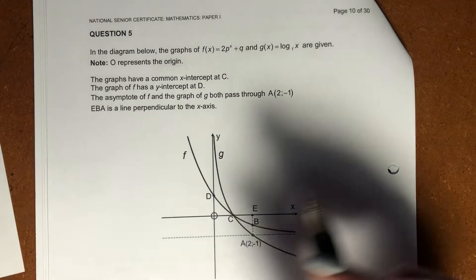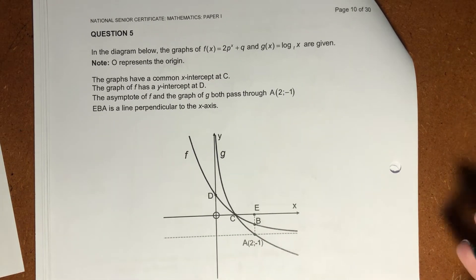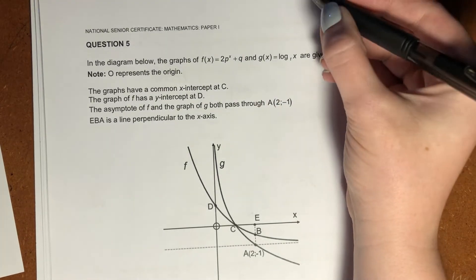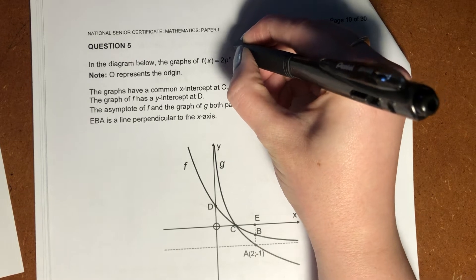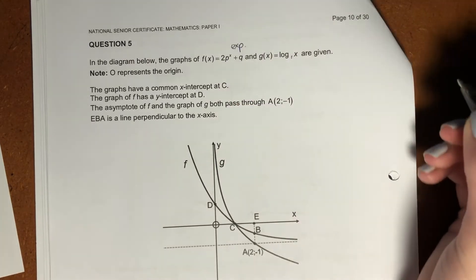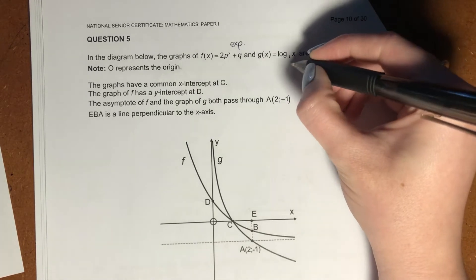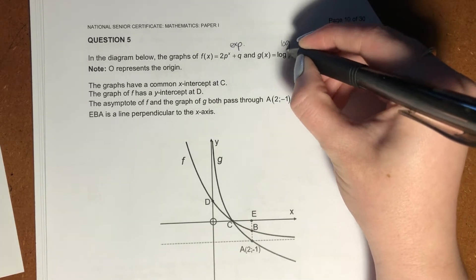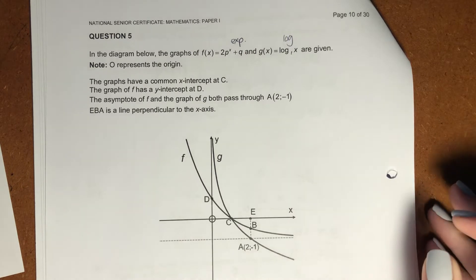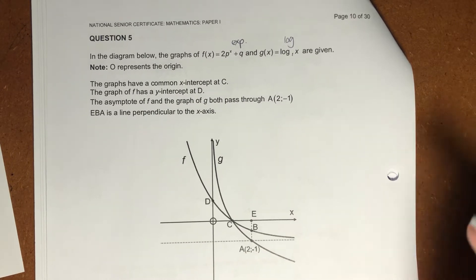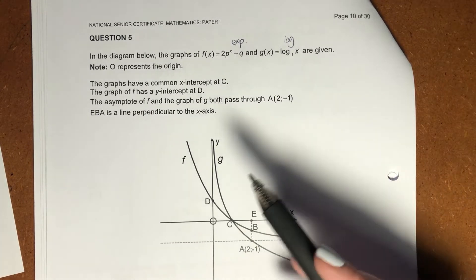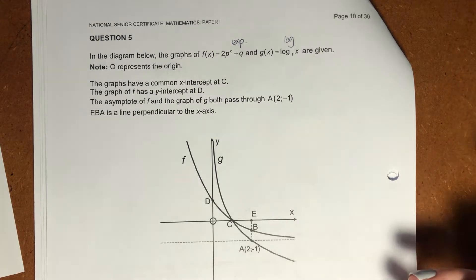So it says in the diagram below, the graphs of f(x) equals 2p to the x plus q. So you should be thinking to yourself, I know that that is an exponential graph. And g(x) equals log with a base t to the x. We know that's a log graph. We know that the log is going to be our inverse function of our exponents function. So we're not too phased about it. But we know that we're going to have to do a bit of work and a bit of manipulation because there's a couple of unknowns.